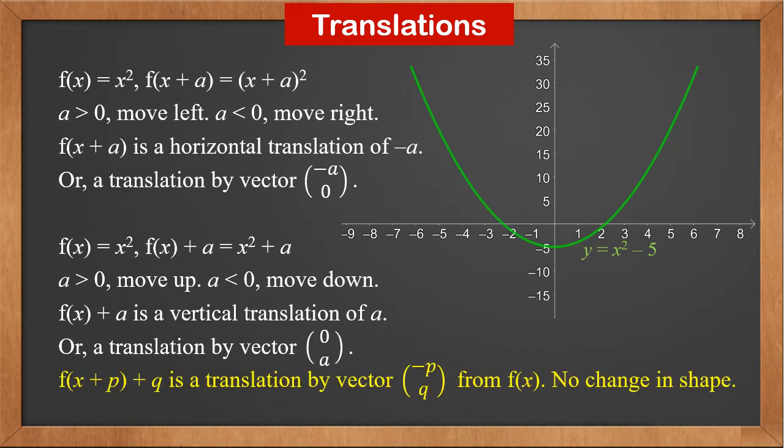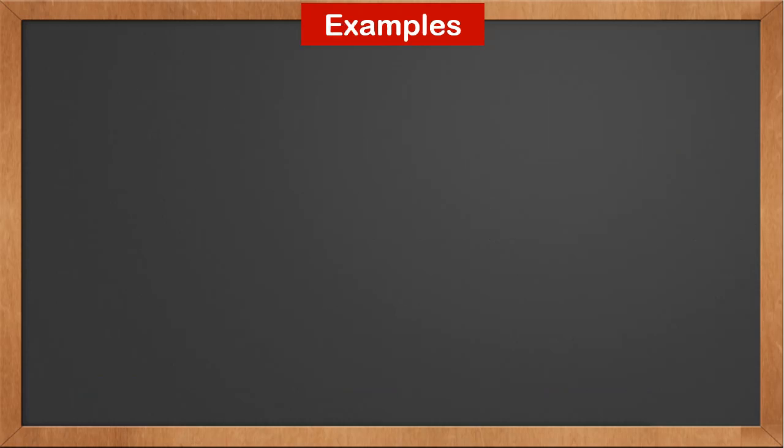So in general, f(x+p) + q is a translation by vector (−p, q) from f(x). There is no change in shape.